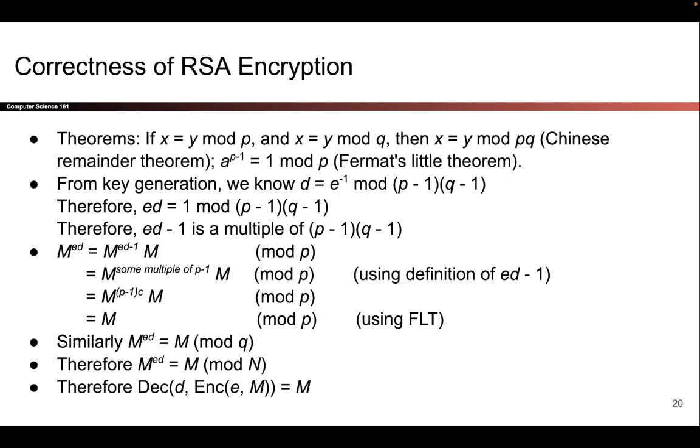These theorems were proved in a prerequisite course like CS70 at UC Berkeley, so we're not going to prove them again. For now, you can treat them as fact. One fact is that if some number is y mod p, and that number is also y mod q, then it must be true that the number is y mod pq. That is something you can prove using the Chinese remainder theorem, although we will not do so here.